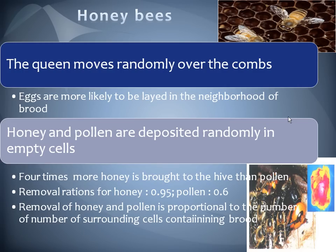Now we discuss honeybees, which is a new observation differing from our last presentation. In a honeybee colony there is a queen, and all the others work as a team in order to protect the bee nest. The queen moves randomly over combs, and honey and pollen are randomly stored in empty cells. The key point is that all members work as a team to protect the bee nest.